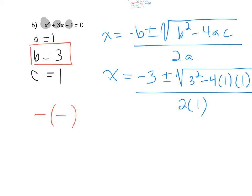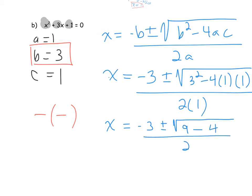Let's see how you did. Simplifying: negative 3 plus or minus the square root of — well, 3 squared is 9, minus 4 times 1 times 1 which is 4 — all over 2. So that gives us negative 3 plus or minus the square root of 5, all over 2.